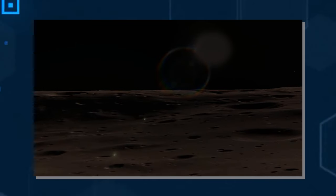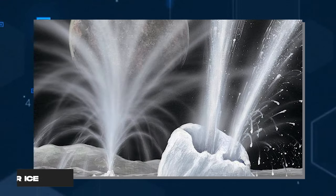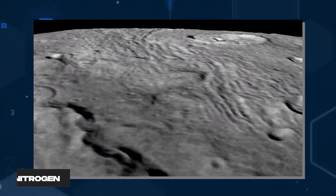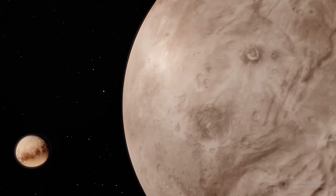Charon, like Pluto, exhibits a surface characterized by notable darkness and a preponderance of water ice mixed with methane and nitrogen. This feature is observed only in certain regions.